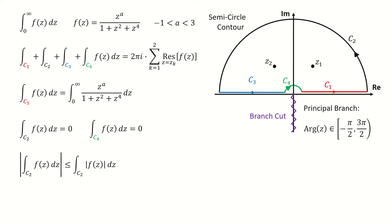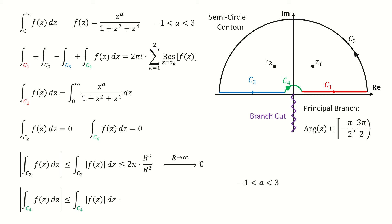On c2, we know the absolute value of this integral is less than or equal to the integral of the absolute value of this function. By doing a similar analysis as in my previous video, we find an upper bound which involves the capital R, the radius of the big circle. Because a is less than 3, when the radius R approaches infinity this upper bound goes to 0, so this integral goes to 0. For the integral on c4, we follow similar steps and find an upper bound involving little r, the radius of the small circle. Because a is greater than minus 1, meaning a plus 1 is greater than 0, when little r approaches 0 this upper bound goes to 0, so that integral also vanishes. This is why we require a to be between minus 1 and 3 — it guarantees these two integrals vanish.